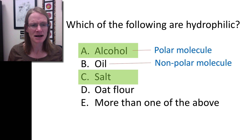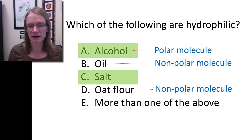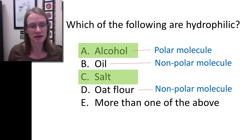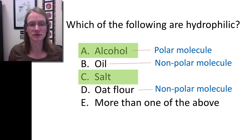We can look at all the things we put into water and ask which ones are hydrophilic. Clearly alcohol and salt are hydrophilic. Alcohol is a polar molecule, and oil is nonpolar, which is the whole reason it's hydrophobic. Oat flour is also nonpolar, so it makes sense that it was hydrophobic too. But what about salt? Salt brings up another interesting question, so let's talk a little bit about salt.